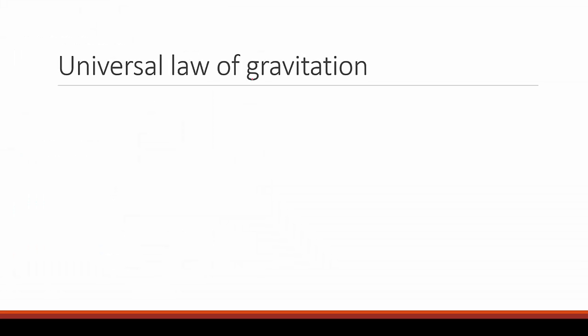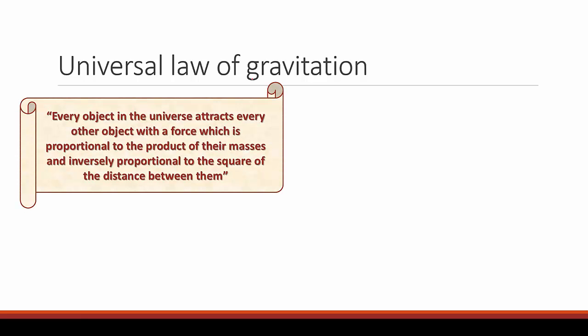In today's chapter let us study the universal law of gravitation. The universal law of gravitation states that every object in the universe attracts every other object with a force which is proportional to the product of their masses and inversely proportional to the square of the distance between them.